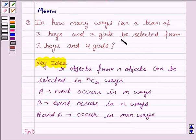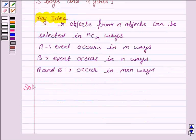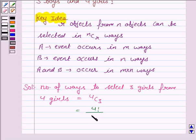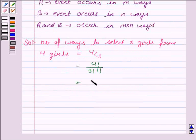Now, we have to select 3 boys and 3 girls from 5 boys and 4 girls. So, number of ways to select 3 girls from 4 girls is equal to 4C3, which is equal to 4 factorial upon 3 factorial into 1 factorial, which is equal to 4.